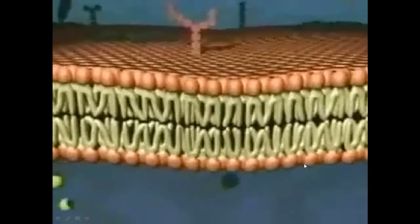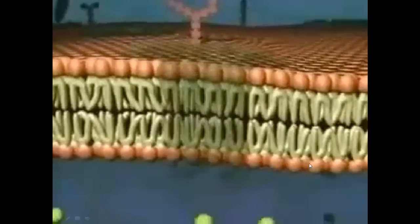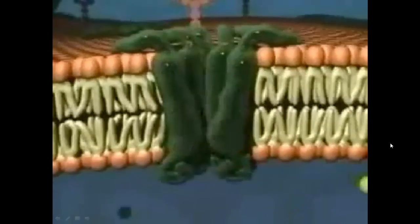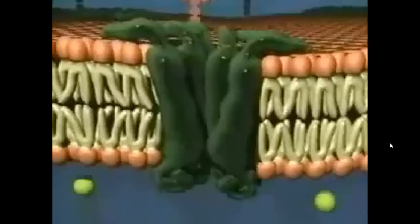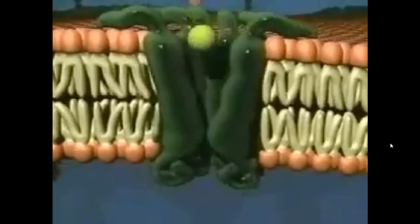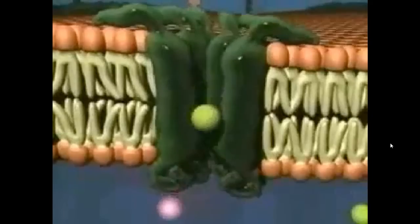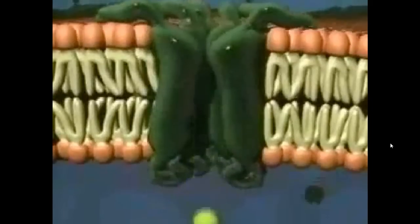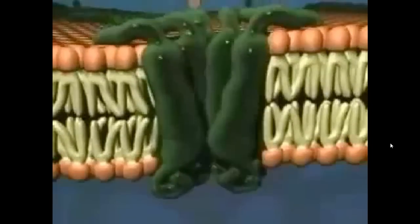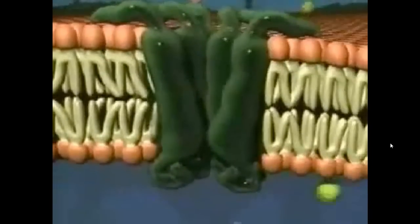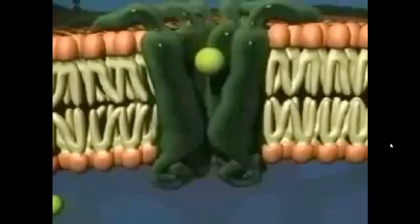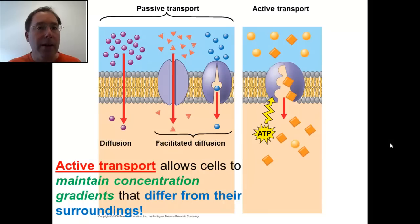In this case, the cell uses transport proteins which need a boost from an energy molecule. This actually changes the shape of the proteins, causing them to pump different molecules and ions across the membrane — from the side with fewer solutes to the side with more. So that's an example of active transport.